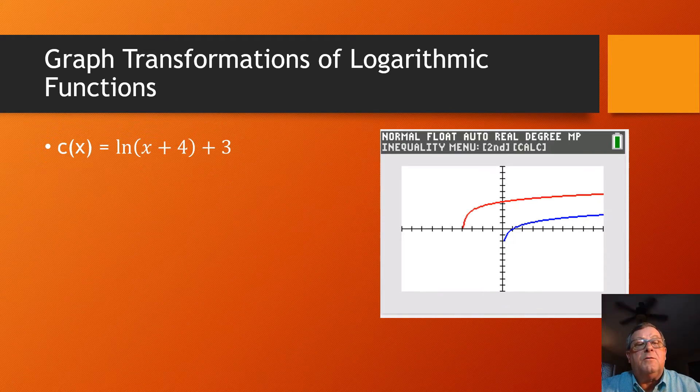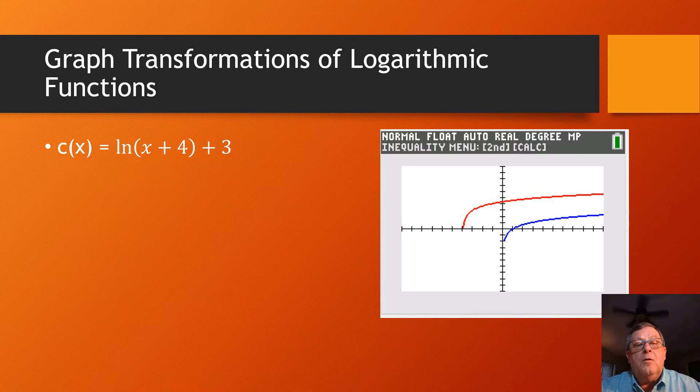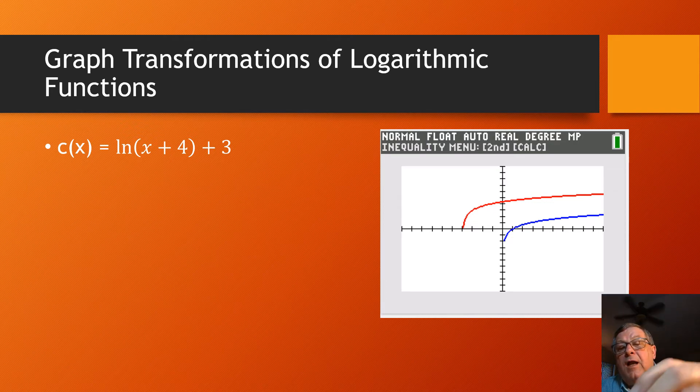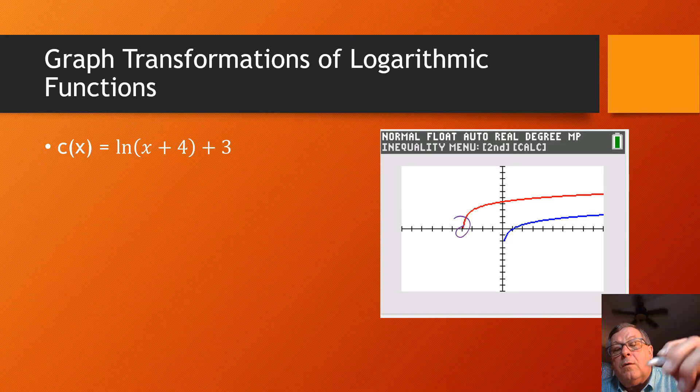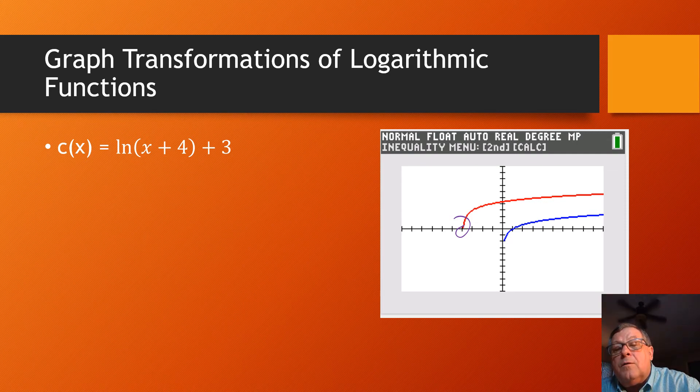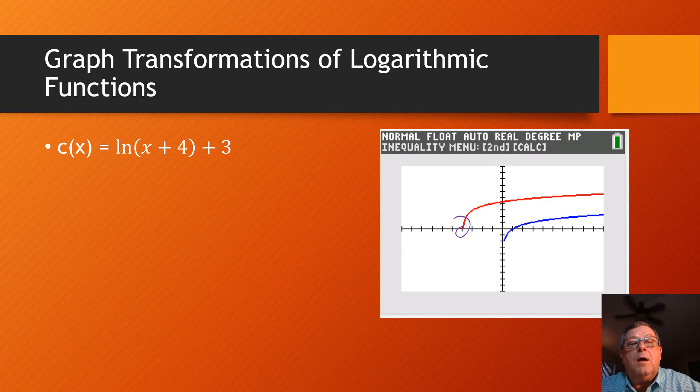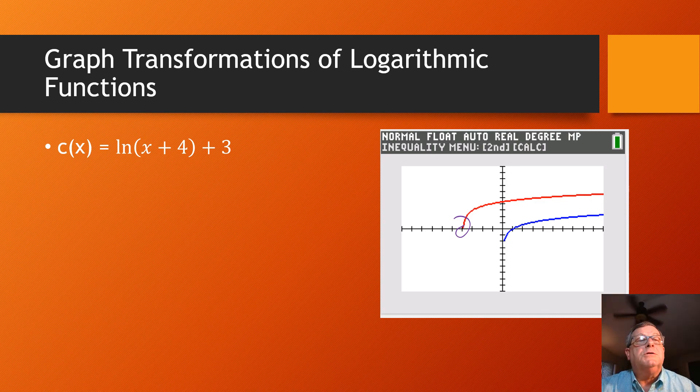And then quickly, let's look at the last one here. So here we've got c(x) equals the natural log of x plus 4 plus 3. Well, I've got this horizontal shift to the left by 4. I go 1, 2, 3, 4 right there. And then we've got a vertical shift up 3 from right here. 1, 2, 3. Shazam. There we go. We've looked at the graphs of transformations of logarithmic functions. Thanks.